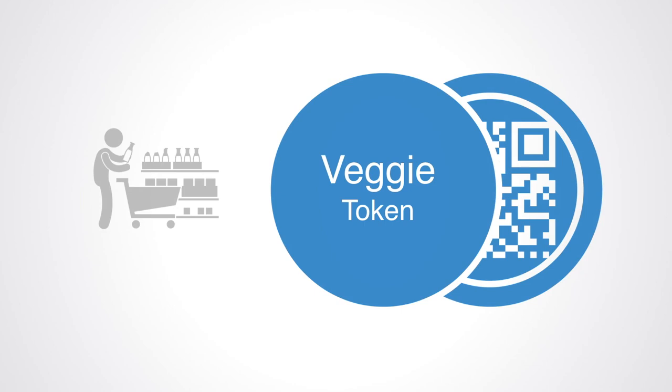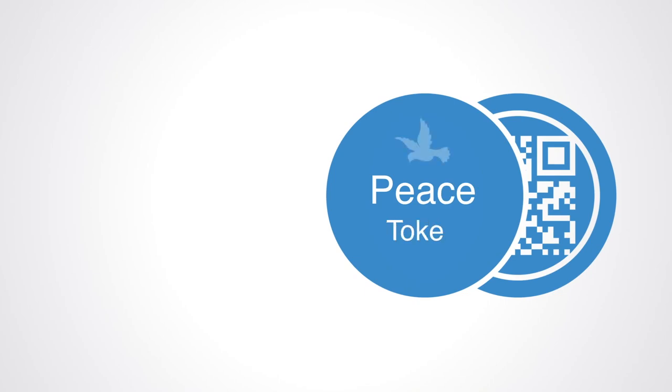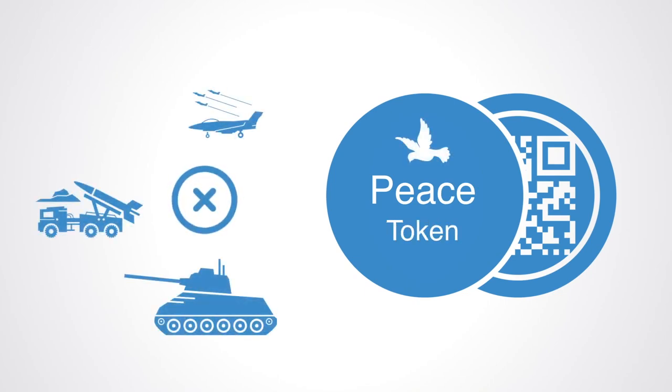Or, as another example, we may have a weapons-free token, which is programmed so that it cannot be used to purchase weapons. If our societies had only tokens of this kind, then weapons could not be purchased, and they would disappear.